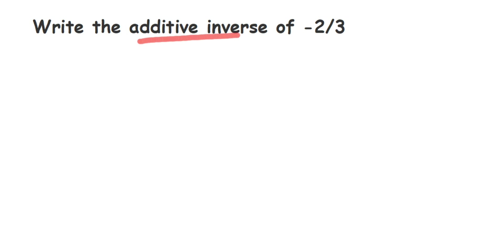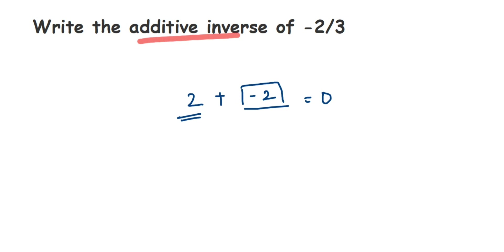Let me take an example of a simple number 2. What should you add to 2 to get the answer 0? It will be minus 2, right — the same number but with the sign changed. The number was positive, so the additive inverse becomes minus 2. If I add minus 2 to 2, I get 0, which means minus 2 is the additive inverse of 2.